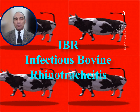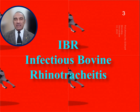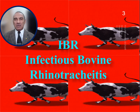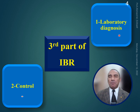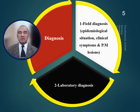We will now discuss the third part of IBR, or Infectious Bovine Rhinotracheitis disease. In the third part, we will be speaking about laboratory diagnosis of this disease and the control measures applied all over the world, including Egypt, the Middle East, and Africa. Diagnosis of IBR includes field diagnosis covering epidemiological situation, clinical signs, and post-mortem lesions discussed in the first and second parts of this film. Laboratory diagnosis will be discussed in this film.